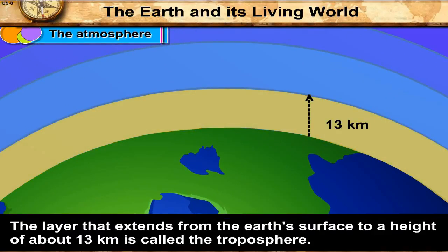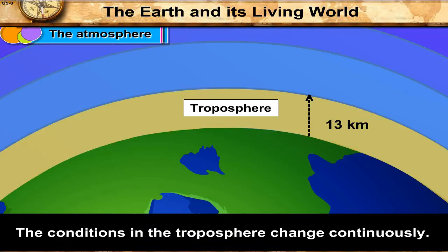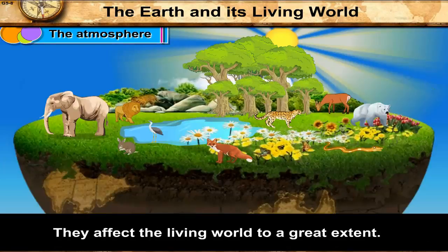The layer that extends from the earth's surface to a height of about 13 kilometers is called the troposphere. The conditions in the troposphere change continuously, and they affect the living world to a great extent.